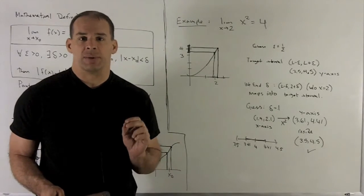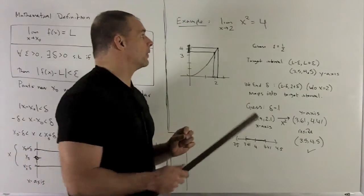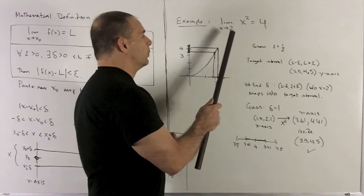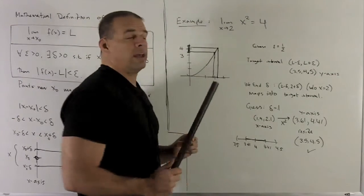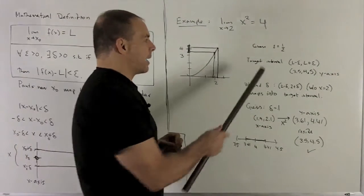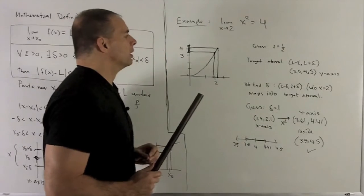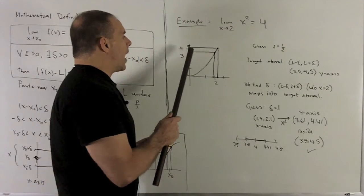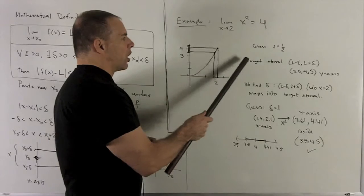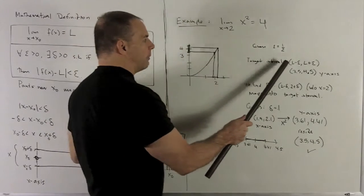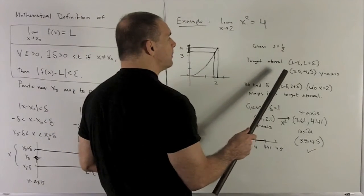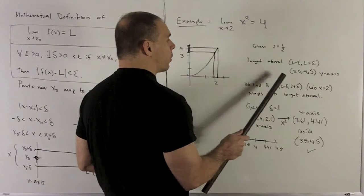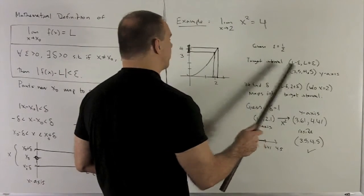So let's take a look at an example to see what's happening numerically. So we'll go with limit x going to 2 of x squared is equal to 4, and somebody's going to come at me with epsilon equal to a half. So on the y-axis, we're going to be looking at the target interval of L minus epsilon, L plus epsilon. So since epsilon's a half and our L is equal to 4, we're looking at 3.5, 4.5.